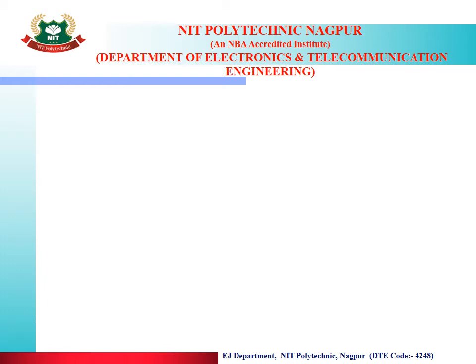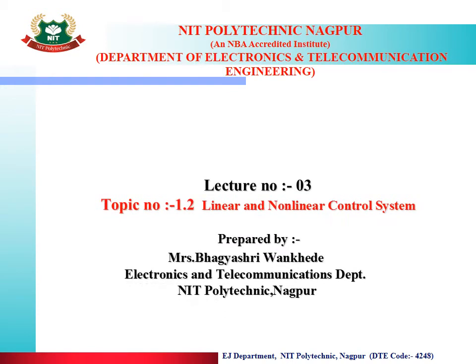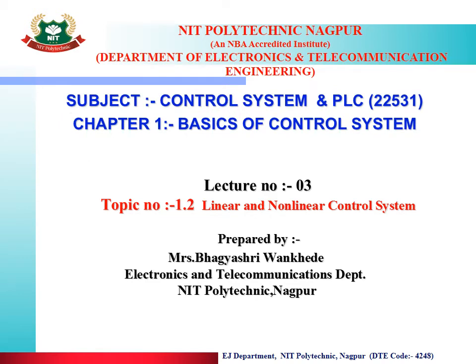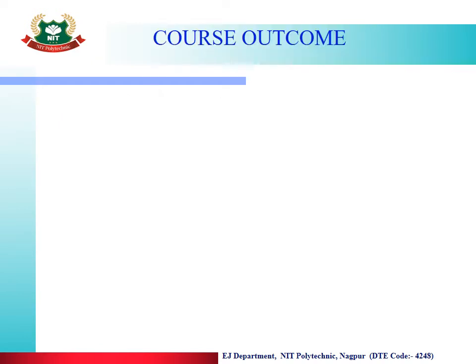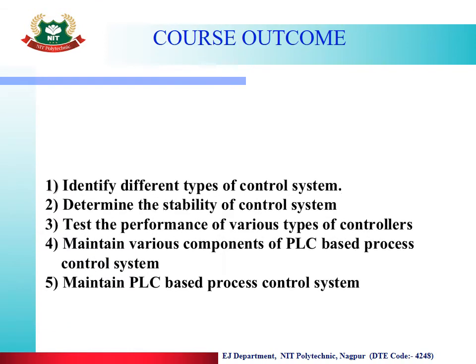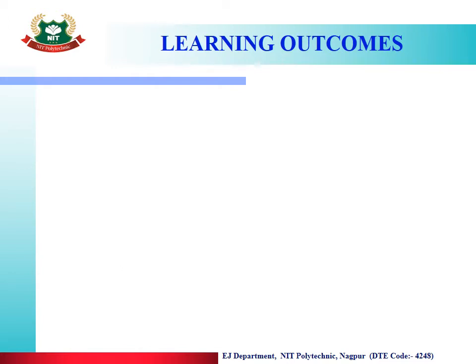Hello dear students, this is Bhagyashree Vaan Khede from Electronics and Telecommunication department of NIT Polytechnic Nagpur. The subject name is Control System and PLC, subject code is 22531, and unit number one is Basics of Control System. The course outcomes are: identify different types of control system, determine the stability of control system, test the performance of various types of controller, maintain various components of PLC based process control system, and maintain PLC based process control system.